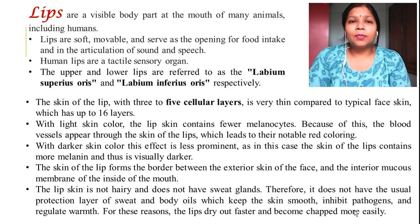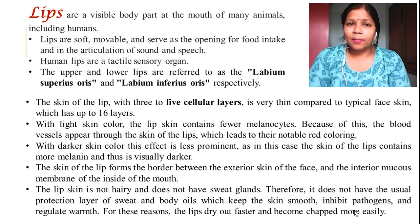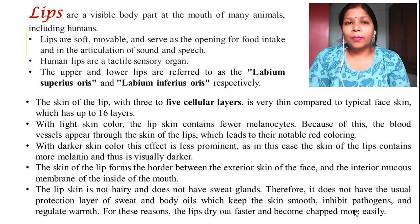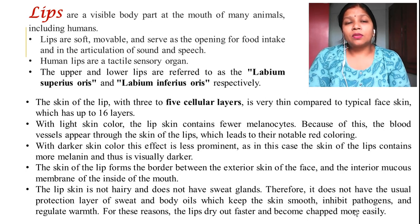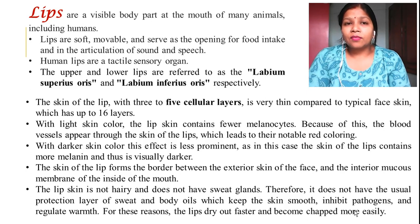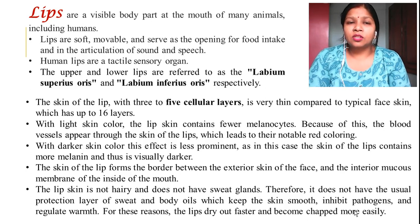They also help in the production of sound and speech. Lips can be divided into two parts: the upper lip, called the labium superius aureus, and the lower lip, called the labium inferius aureus. The cellular layer on the lip has only five layers compared to the skin of your face, which has 16 layers, so the lips are very sensitive.